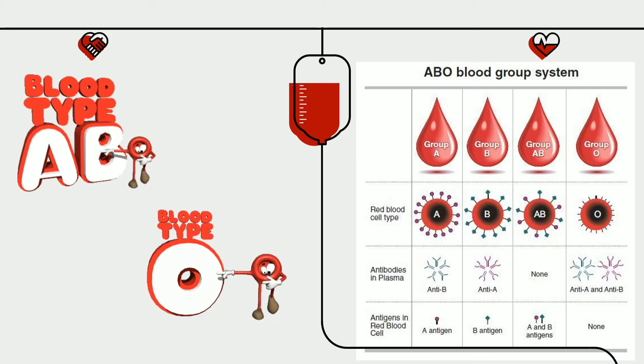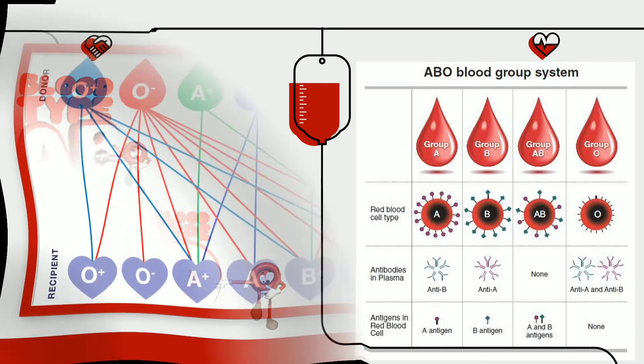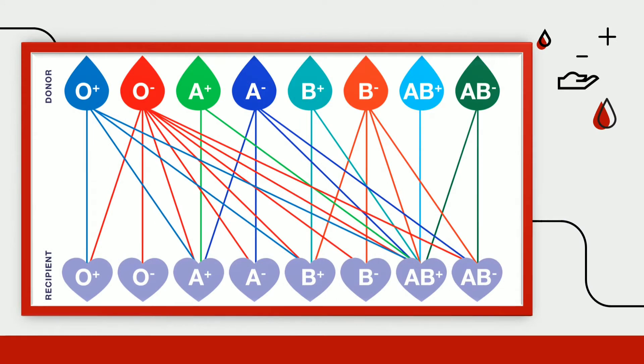Studies made until now have revealed the existence of more than 200 groups of human blood. However, as far as the transfusion of blood to any patient is concerned, only the aforementioned four groups of blood are important.